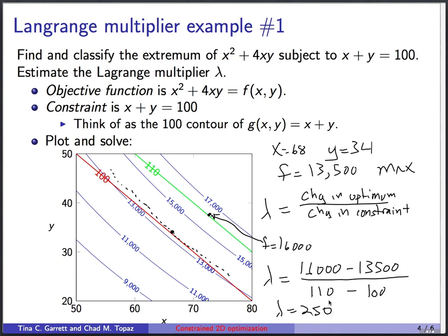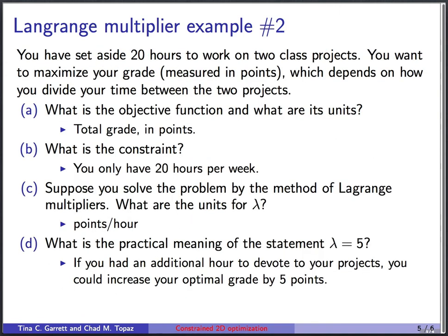That's the first example. The second example, we won't make a plot, but we'll do some more interpreting here. So you have set aside 20 hours to work on two class projects. And you would like to maximize your grade measured in points, which depends on how you divide your time between the two projects.